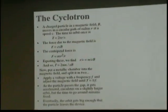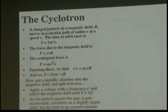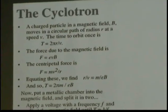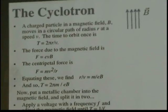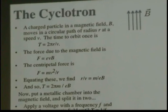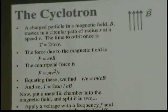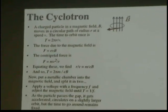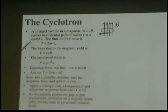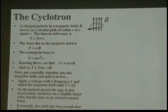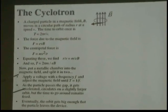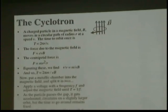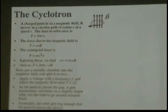The first particle accelerator which used this principle was called the cyclotron. In a cyclotron, we have a charged particle sitting in a fixed magnetic field. It moves in a circular path because of that magnetic field, with path radius r and speed v. The time to orbit once, t, is given by 2 pi r — the circumference — divided by the velocity.